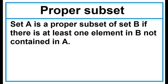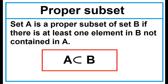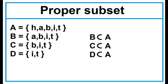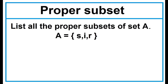Proper Subset — Set A is a proper subset of Set B if there is at least one element in B not contained in A. Example: Given Sets A, B, C, and D — Set B is a proper subset of Set A, Set C is a proper subset of Set A, and Set D is a proper subset of Set A. List all the proper subsets of Set A.